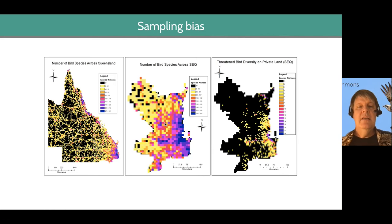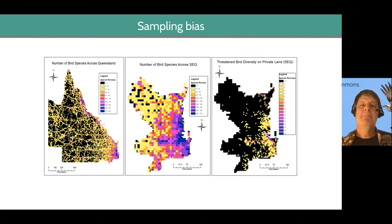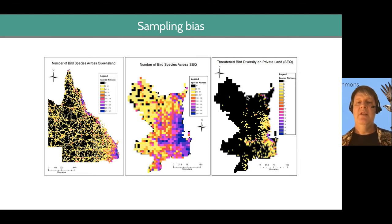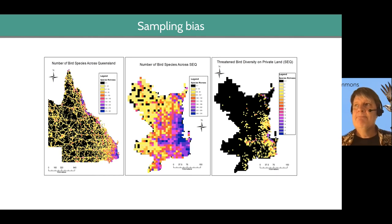If we ask a really naive question of these data — if somebody gave me $100 million and said, I want you to buy a reserve with the most threatened bird species on it — if I take the raw data and look at where private lands have the most bird species recorded, I get this map. And sure enough, it looks like the best place to buy a property would be along here in Brisbane because that's where the most threatened species have been recorded.